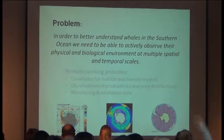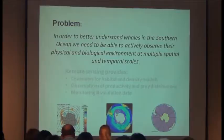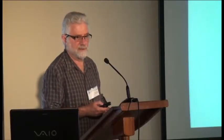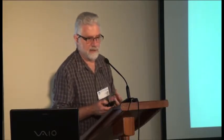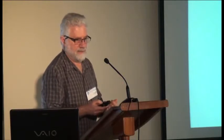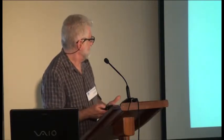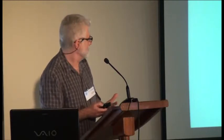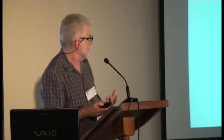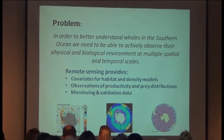The problem we have is that in order to better understand whales in the Southern Ocean, we need to be able to directly observe their physical and biological environment at multiple spatial and temporal scales. It's really important for us to understand what's going on in the entire Southern Ocean ecosystem and then be able to scale these things all the way down to individual animals and their behavior. Remote sensing provides covariates that allow us to build habitat and density models, observations of productivity and prey distributions, and very important monitoring and validation data.